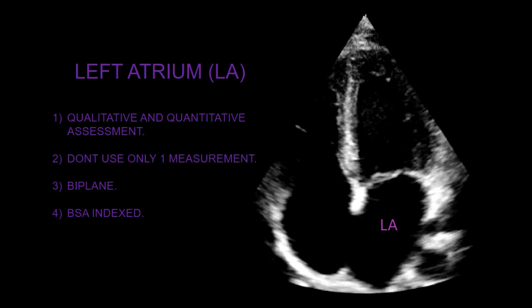First, always do a global visual assessment of the left atrial size and then proceed to do the measurements. Number two, always use more than one measurement before making any conclusions — for example, left atrial diameter, length, area and volumes. Number three, the best way to assess the left atrial size is by doing a Simpsons biplane from the apical four and two chamber views. And number four, always index the measurements by body surface area.